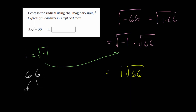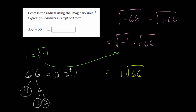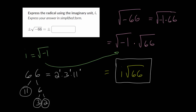Since 66 is less than 100 and its digits repeat, we know it's a multiple of 11. So this is really 11 times 6, and 11 is a prime number. 6 breaks down into 3 times 2. So 66 is really 2 times 3 times 11. Since there are no perfect squares here — all of these are to the first power — we won't be able to simplify the square root. The square root of 66 is already in its most simplified form, because if we try to take the square root of 2, 3, or 11, we just get irrational numbers. So plus or minus the square root of minus 66 equals plus or minus i times the square root of 66.